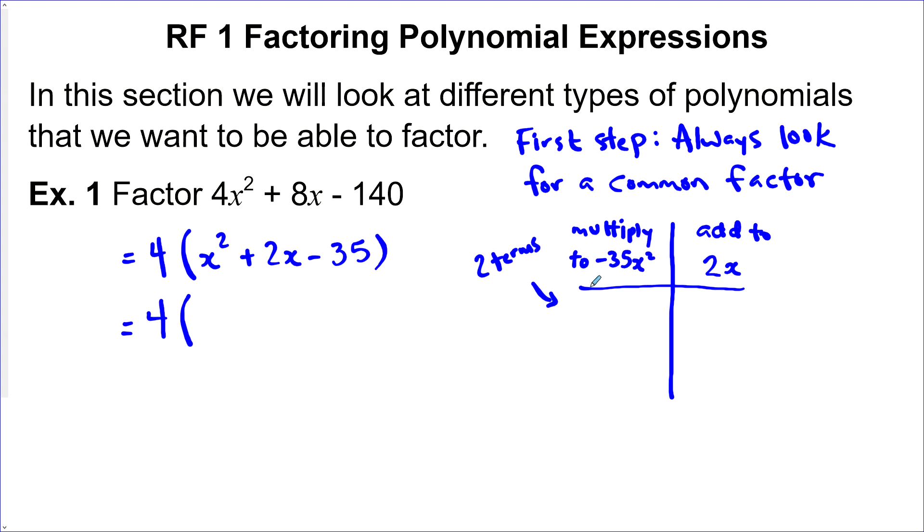That multiply to negative 35x² and add to 2x. So don't be afraid to list them out. In this case, 7 and 5. How about a negative 7x and 5x? And that adds to negative 2. So that's not the one we want. But if we just switch that around 7x and negative 5x, that adds to 2x. And so that's the one we want.